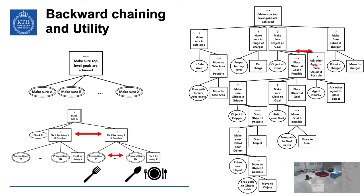But you can't always reorder preconditions. For example, placing an object at a goal requires having the object in the gripper and being close to the goal. If you get close to the goal first and then try to get the object — which might be far away — you can no longer remain close to the goal. So it makes sense to get the object first and then get close to the goal. In this case, reordering based on utility won't work.